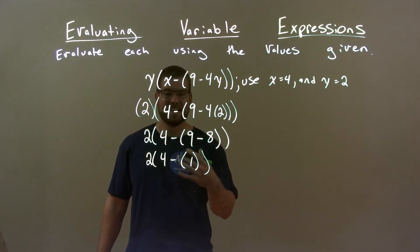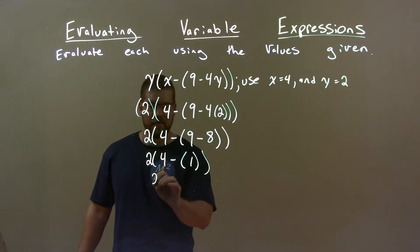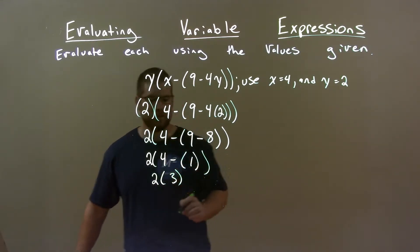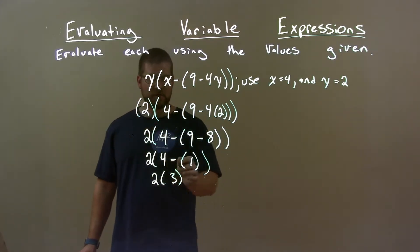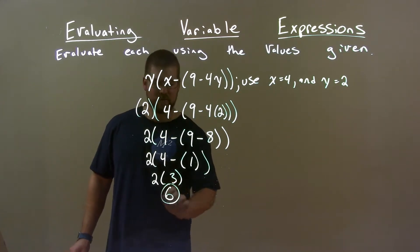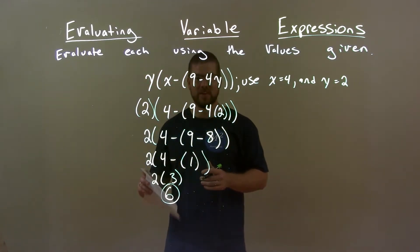Now 4 minus 1 is a 3. So we have 2 times 3, again, most inside parentheses, and 2 times 3 is 6. So final answer is just 6.